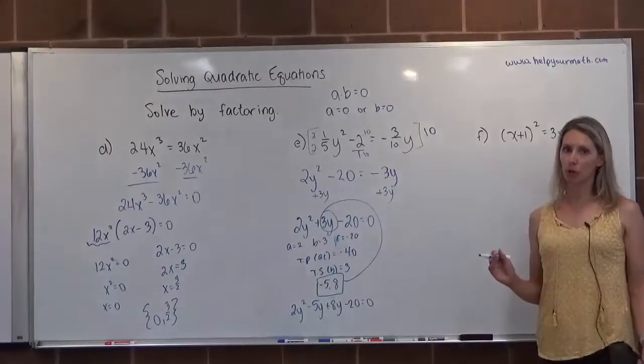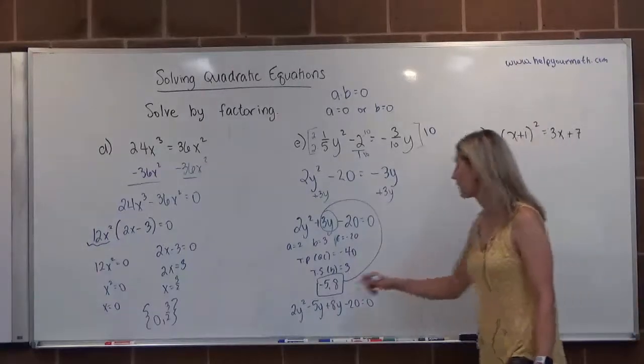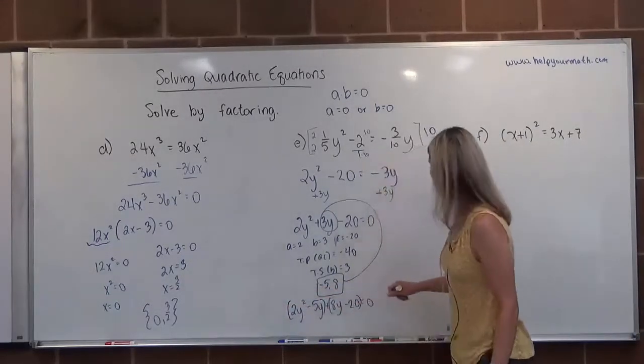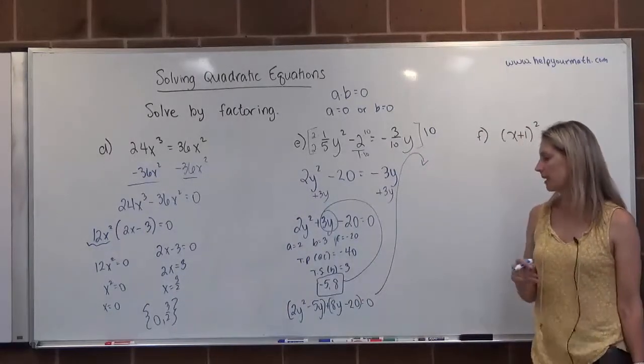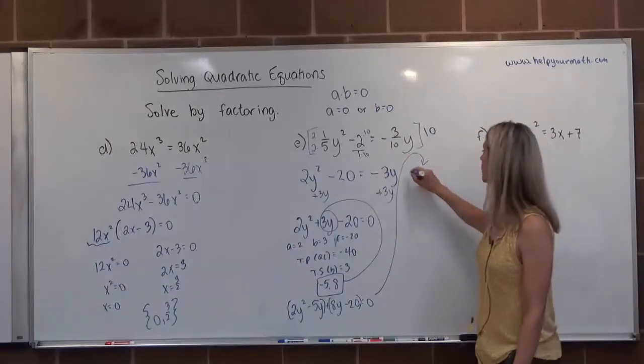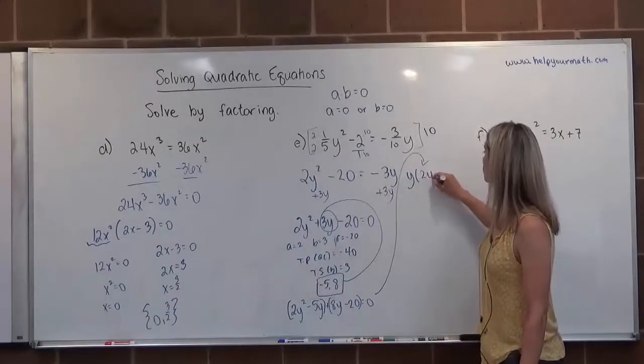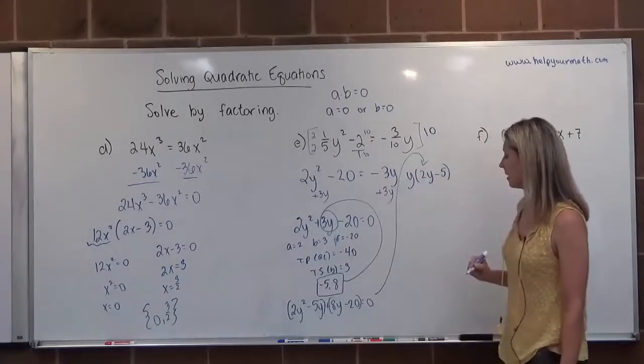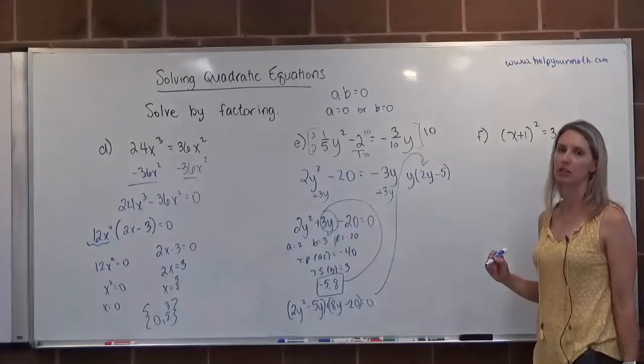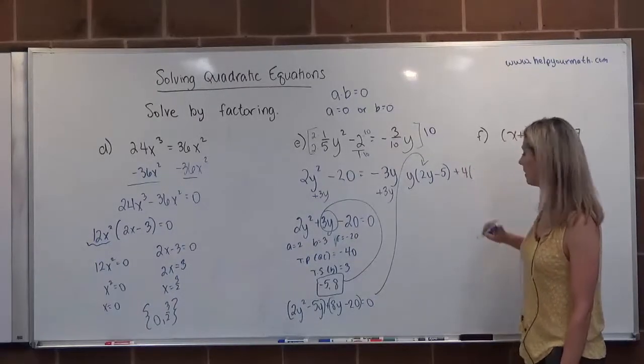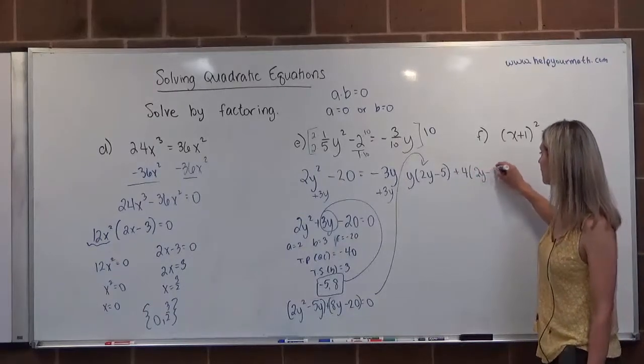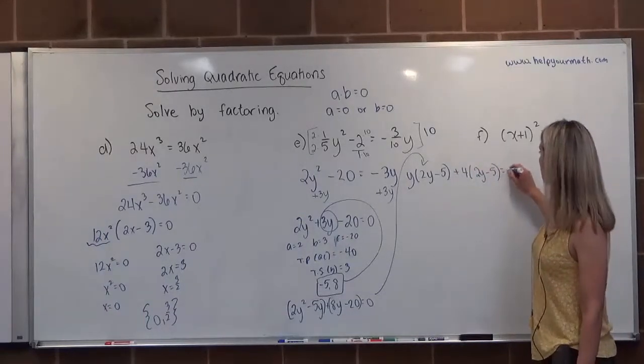Now that I have four terms on the left-hand side, I can factor by grouping. We're going to group the first two terms, group the second two terms. 2y squared minus 5y, the GCF is y, so that would be y times 2y minus 5. The second grouping, 8y and 20, have a GCF of 4. So that would be plus 4, and dividing 4 into both terms would leave me with 2y minus 5 equals 0.